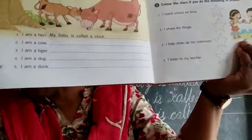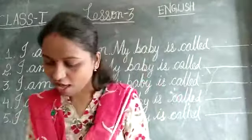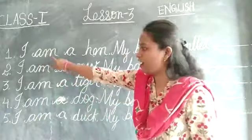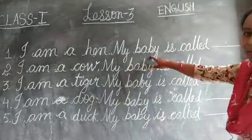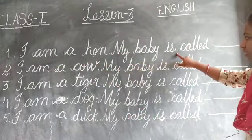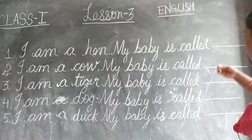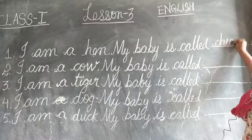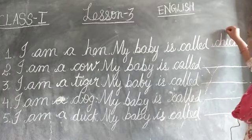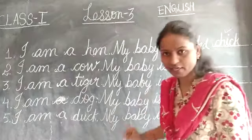So what I have written on the board — let's see what this is. First one: see in your textbook — I am a hen, my baby B-A-B-Y is called C-A-L-L-E-D — called — chick, C-H-I-C-K. They have already written 'chick,' you need not write this one.